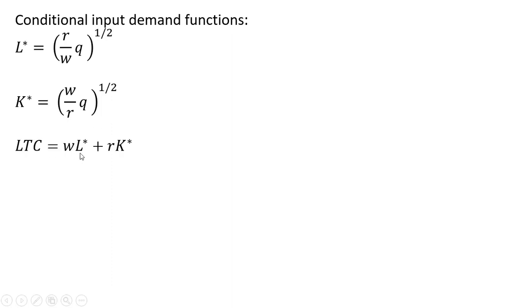So setting up long-run total cost is W times L plus R times K. We'll make a substitution into this long-run total cost here with our conditional input demands. And we get this result.